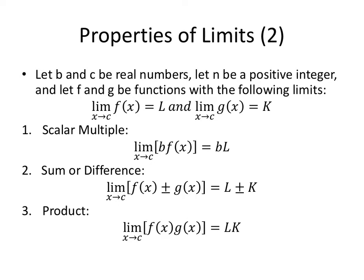Properties of Limits 2. Let B and C be real numbers. Let N be a positive integer. And F and G are functions such that the limit as X approaches C of F of X equals L and the limit as X approaches C of G of X equals K. So both of these functions have a limit at C. Scalar multiple property says if you're multiplying a scalar constant, so a number, B is just a real number, B times a function, the limit can just move the B out in front, the constant out in front, and it's B times the limit L, the limit of X approaches C of F of X. The sum, excuse me, let me rephrase. The limit of a sum is the sum of the limits. Similarly, the limit of a difference is the difference of the limits.